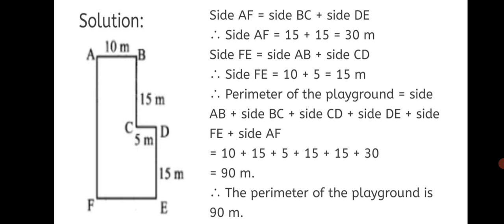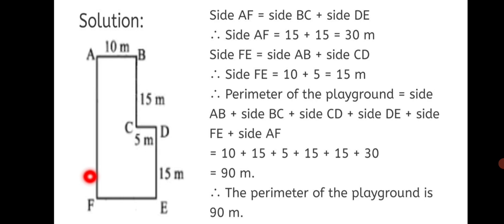Side AF equals side BC plus side DE, which is 15 plus 15 equals 30 meters. To find side FE, we add AB plus CD, which is 10 plus 5 equals 15 meters. So side FE equals 15 meters.